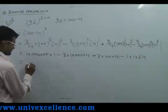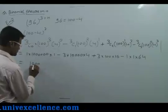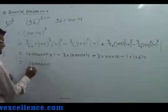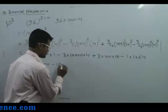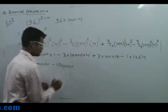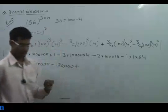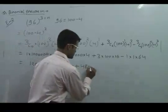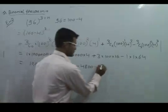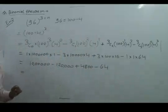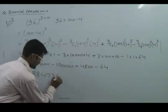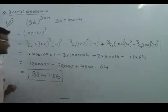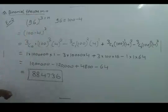So now you can write: 1 into 1,000,000 (100 cube), minus 3 into 10,000 (100 squared) into 4, plus 3 into 100 into 16, minus 64. This gives you the answer for 96 cubed, which is 884,736.